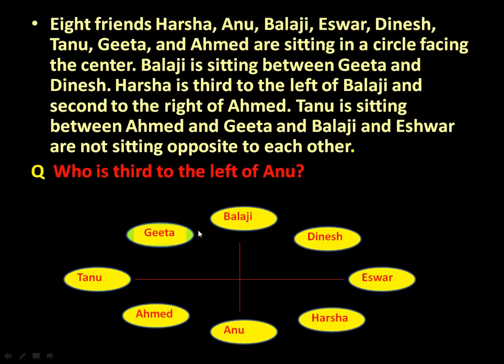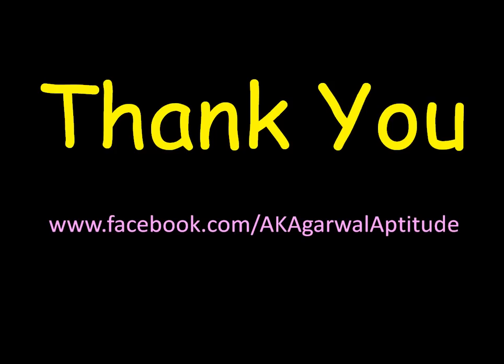Friends, like this you can answer any question based on the information once you have this table. For example, who is sitting opposite to Ahmad? Obviously it is Dinesh. Who are the neighbors of Ishwar? Dinesh and Harsha. You can answer any question once you have this tabular format. Thank you very much for watching this video. You can also follow me on Facebook.